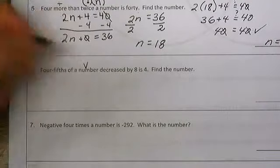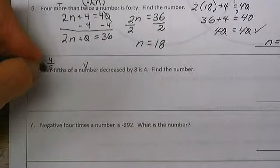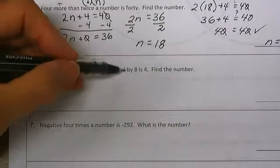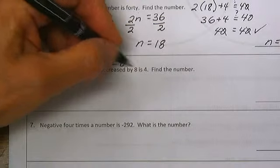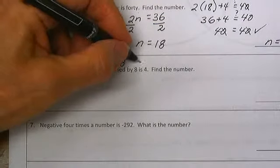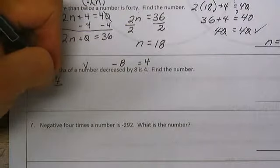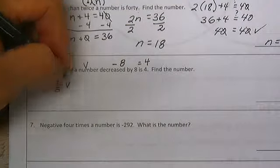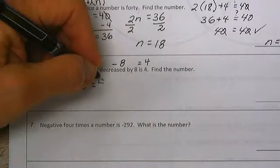Let's call it V. Four-fifths of a number is just 4 divided by 5. Decreased by 8, that's subtract 8, is 4. Four-fifths times our number minus 8 is equal to 4.